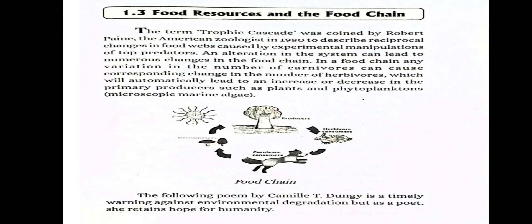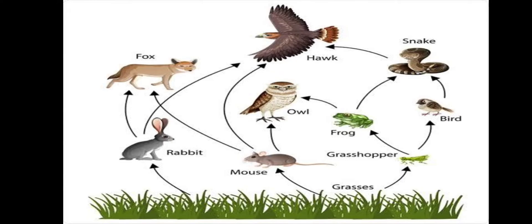Trophic Cascade is a term coined in 1980 by Robert Payne, the American zoologist. A food chain shows how organisms are related to each other by the food they eat, and each level of a food chain represents a different trophic level.